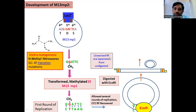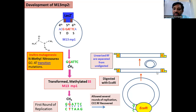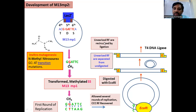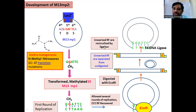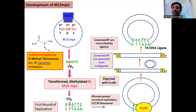Linearized replicative forms are separated from undigested circular ones — meaning those that have the restriction site. Again, the linearized M13 constructs are recircularized by ligation with the help of T4 DNA ligase. This ligation leads to the formation of circular replicative forms with the EcoR1 restriction site in the lacZ' region.